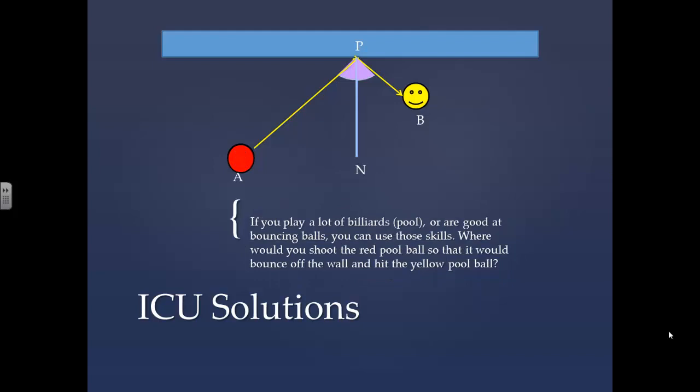If you play a lot of billiards or pool, or are good at bouncing balls, you can use those skills. Where would you shoot the red pool ball so that it would bounce off the wall and hit the yellow pool ball?